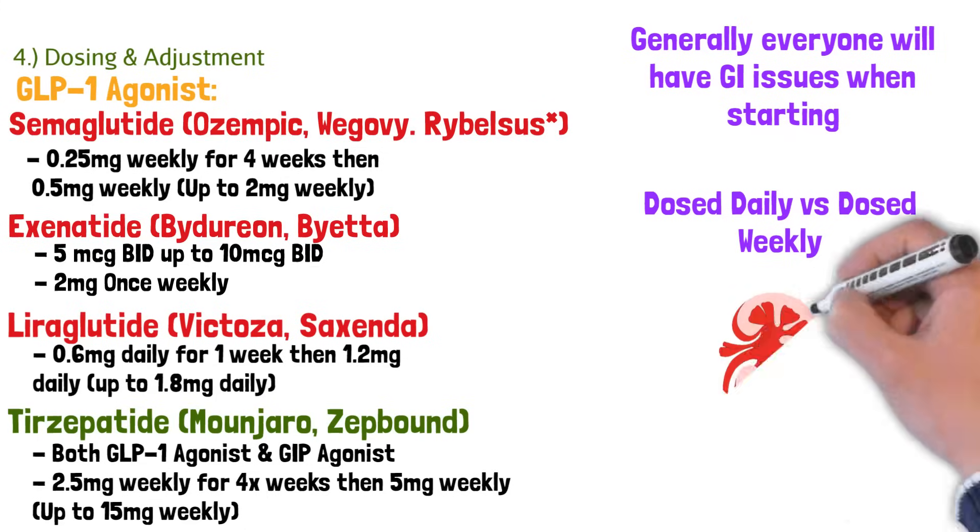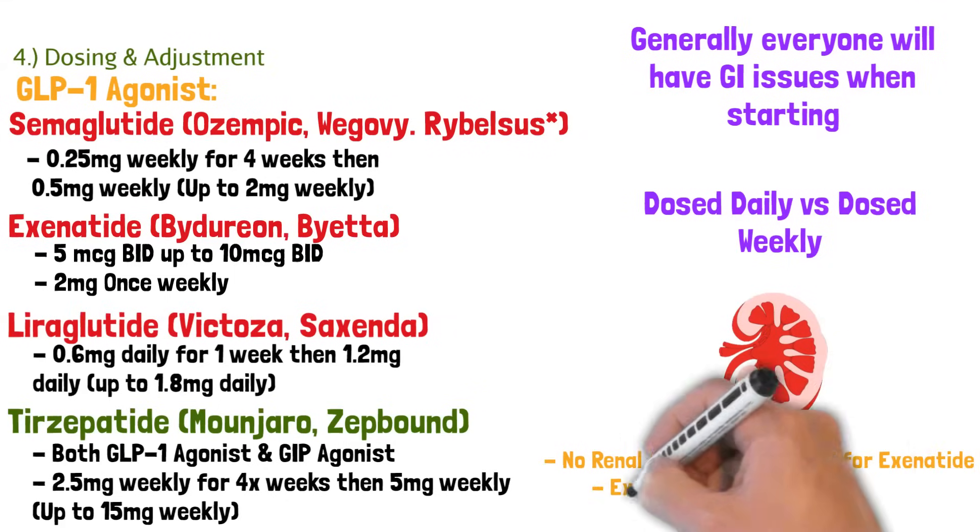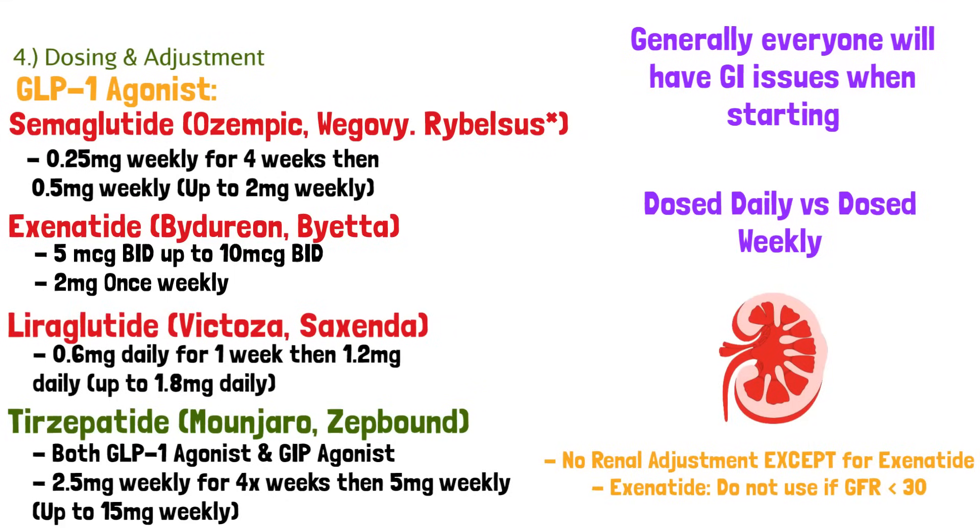And the last thing I want to talk about here is kidney function. What's amazing is most of these drugs do not need renal adjustment, meaning you don't need to change the dose if a patient's kidneys are not functioning well, except for exenatide. So if a patient has kidney problems, exenatide is not your choice. And specifically, the label is do not use exenatide if the patient's GFR is less than 30.